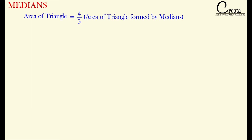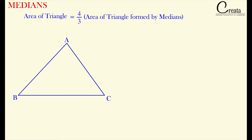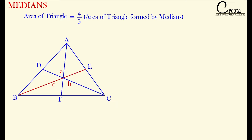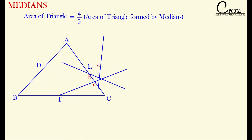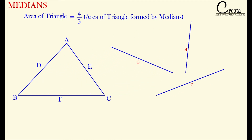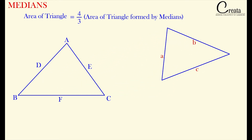Firstly, we will see what is the triangle formed by the medians. For that, let's take a triangle ABC with medians as AF, CD and BE. Three medians are there. Let's give the name to the medians as A, B and C. Let's take the three medians out of the triangle. Can we form a triangle from these three sides? That is a triangle with sides A, B and C. This triangle we will call as the triangle formed by the medians.